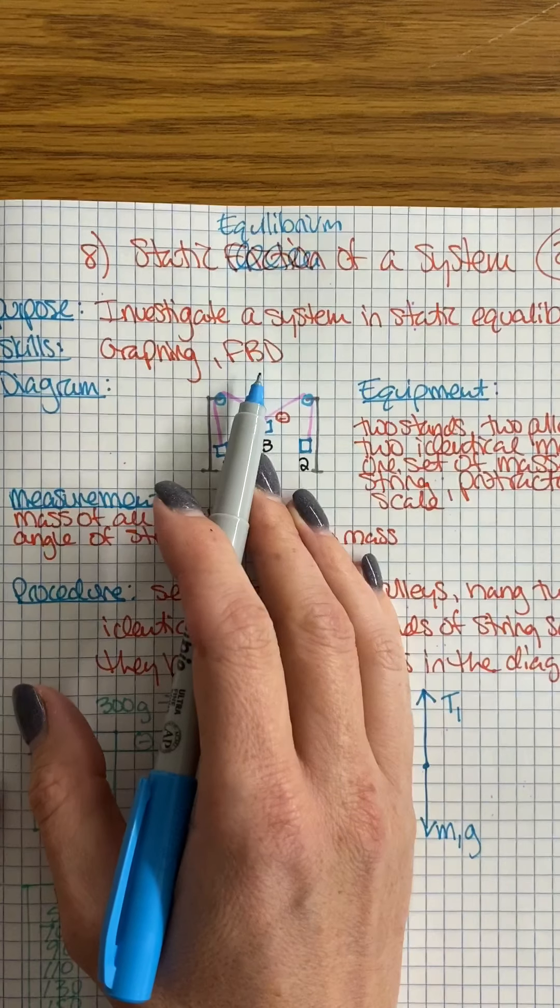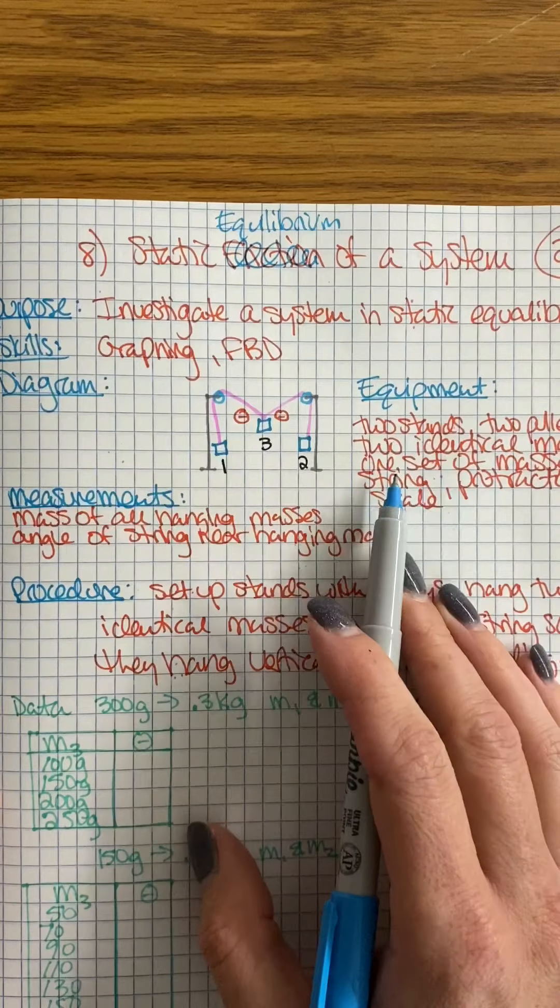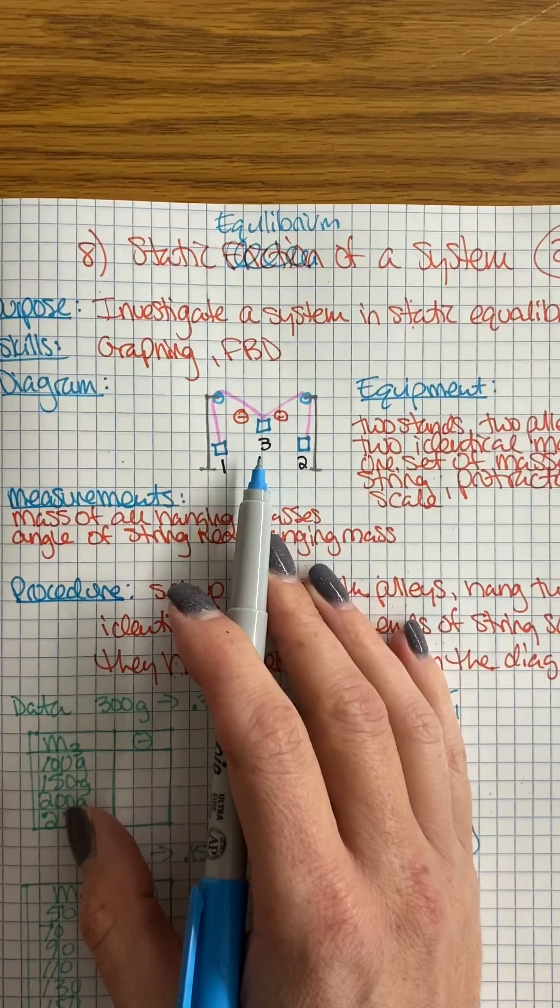We're going to be graphing, drawing some free body diagrams. Equipment: two stands, two pillars, two identical masses, and a set of masses that we change for the middle.